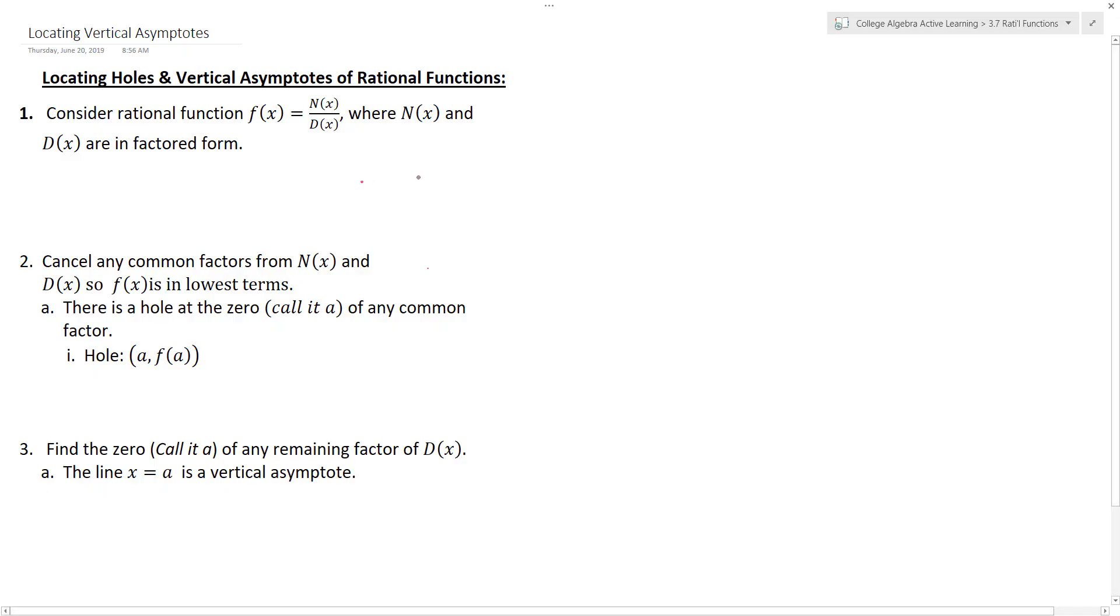The focus of this video is on finding the holes and vertical asymptotes of a rational function. We're going to consider the rational function f(x) equals x squared minus 4 over x squared plus 5x plus 6.